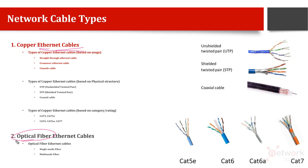Copper ethernet cables can be further classified in three ways: the first classification is based on their usage, the second is based on their physical structure, and the third is based on their category or rating. Let's see them one by one.